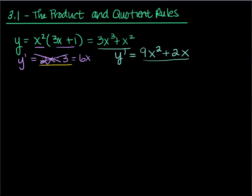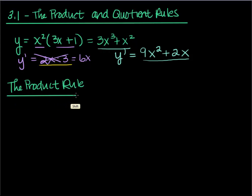We cannot — I call it — distributing the derivative across multiplication. So hopefully you've read the book. If you look on page 202 in the book, they do a pretty nice job of explaining or proving the product rule. To prove the product rule, what you have to do is go back to the definition of the derivative. But here's what the product rule says.